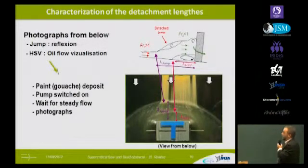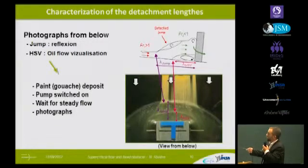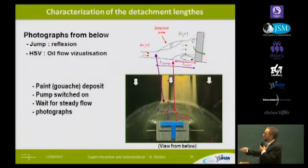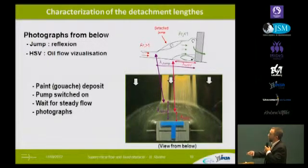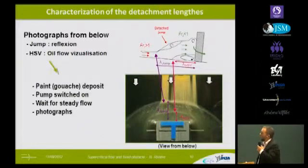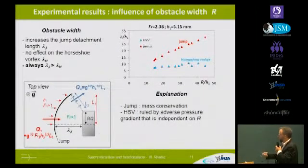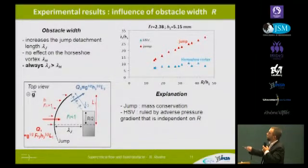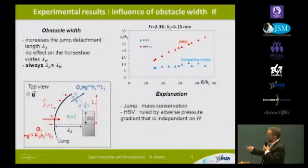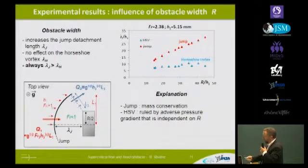We want to characterize the detachment lengths of both the hydraulic jump and the horseshoe vortex. For this we use photographs from below: a camera under the table allows us to see the reflection showing the toe of the hydraulic jump, and by releasing some paint we can see the flow separation and the horseshoe vortex. We obtain results showing the detachment length of both the jump and the horseshoe vortex as a function of obstacle width. When we increase the width of the obstacle, both the jump detachment and the horseshoe vortex increase — although the horseshoe vortex is less strongly affected. This is in qualitative agreement with our model.